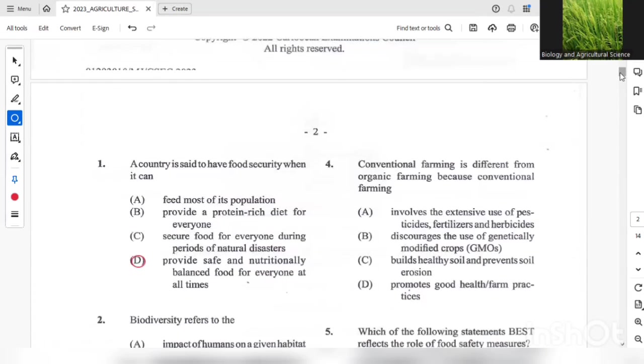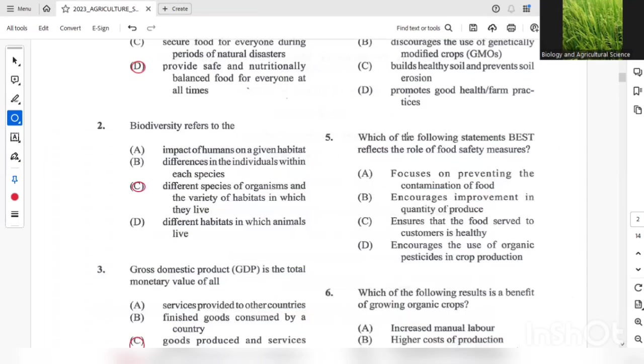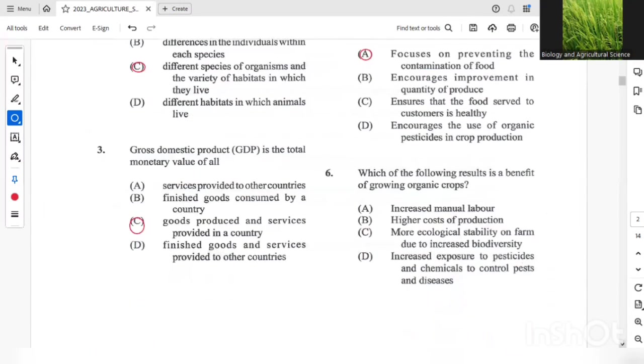We will move on to question 4, Conventional farming is different from organic farming because conventional farming will involve the use of a lot of pesticide, a lot of fertilizer and herbicides. Which of the following statements best reflects the role of food safety measures? Well, option A would be the best answer in that it focuses on preventing the contamination of food. Question 6, which of the following results in a benefit of growing organic crops? So the answer here should be more ecological stability in the farm due to increased biodiversity. That should be a benefit of organic farming.